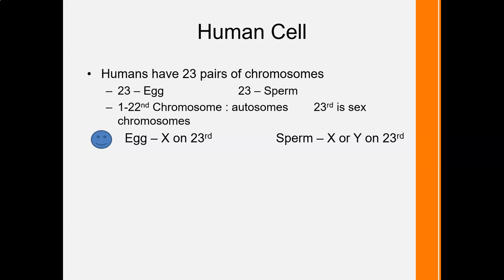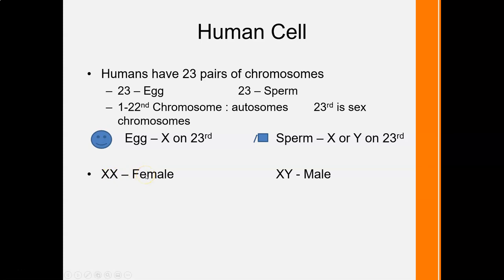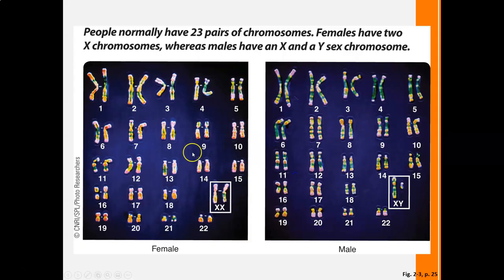An egg on the 23rd chromosome always carries an X. A sperm will either carry an X or a Y. Depending on which sperm penetrates the egg, you will either get XX — one X from the egg, one X from the sperm — and a female is produced, or an X from the egg and a Y from the sperm, producing a male. So a female has XX and a male has XY, and this is determined by the sperm.